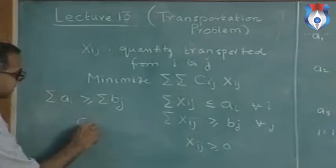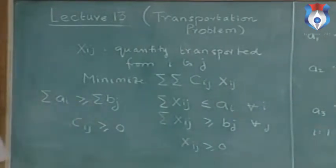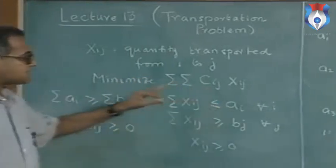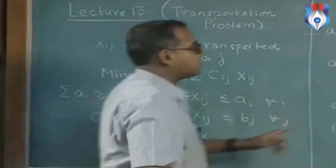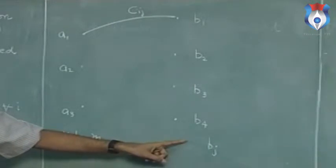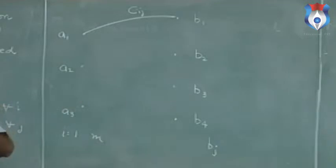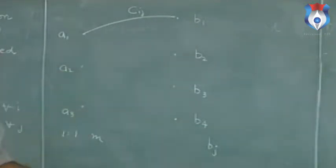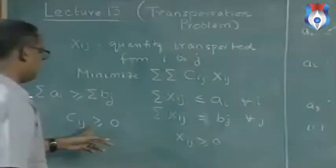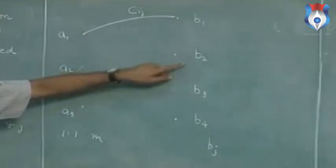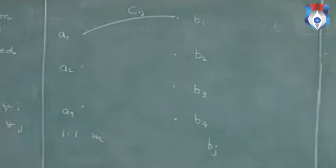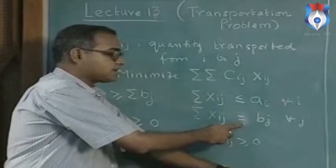It is reasonable to assume that the transportation cost C_ij is greater than or equal to zero for all i, j — transportation cost cannot be negative. When the transportation cost is non-negative, we will send exactly the amount required to each destination; no destination point will receive even one unit more than needed, because that extra unit would only increase transportation cost. So in the optimal solution, we send exactly the quantity needed at each destination point. We therefore solve the problem where the greater-than-or-equal-to inequality has been converted to an equation.